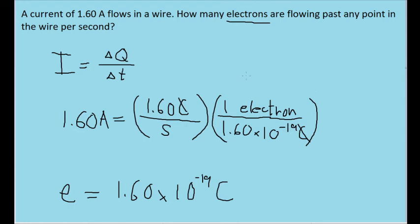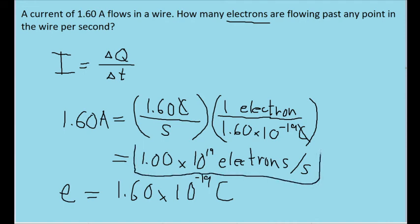And if we were to put this in our calculator, we would find that 1.60 amperes of current translates to about 1.00 times 10 to the 19th power of electrons per second. And that is the electron flow rate.